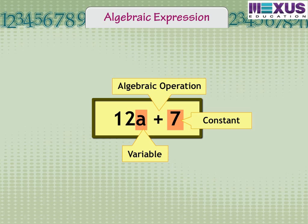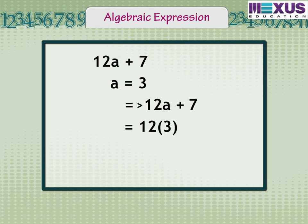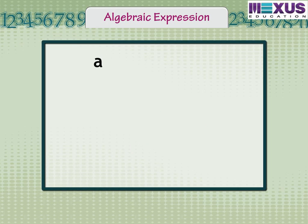Thus, as a takes on different values, the value of 12a plus 7 goes on changing. For instance, if a is equal to 3, then 12a plus 7 becomes 12 times 3 plus 7. We get 36 plus 7 equal to 43.